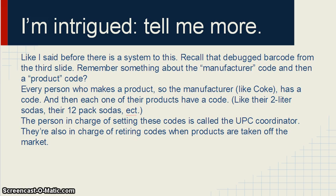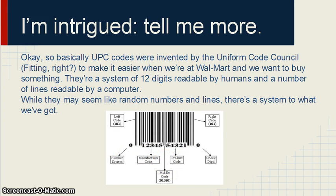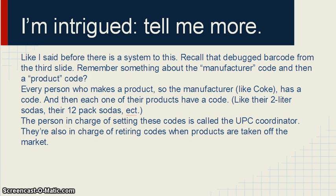So let's look back at our debug code — we see the manufacturer code and the product code. Every manufacturer has a code. Coke has their own code, Pepsi has their own code, that frozen pizza company has their own code. Everyone has a different code and every product has a different code. Pepperoni pizza has a different code than combination pizza. Two-liter Cokes have a different code than twenty-ounce Cokes. Twelve-pack Cokes have a different code than twenty-four-pack Cokes. Every single product has a different code. There are people in charge of setting these codes and they're called the UPC coordinator. They're also in charge of retiring the codes when products are taken off the market, making sure no code is ever made twice. They probably do the math for hours a day — seems like a pretty fun job.